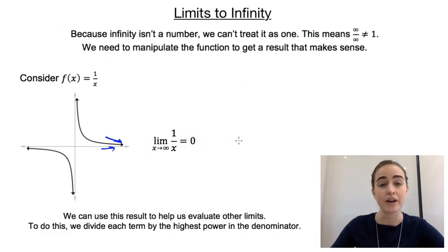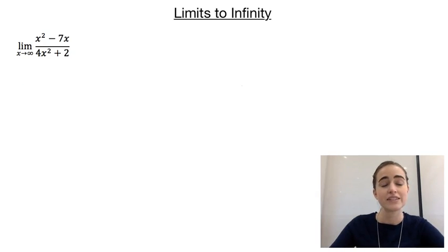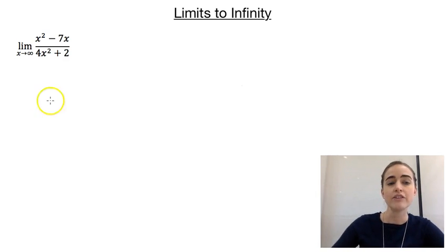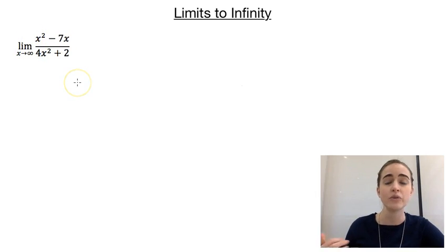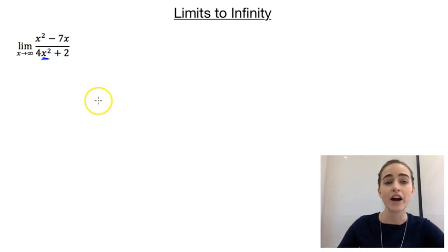To do this, we're going to divide every single term by the highest power in the denominator. So our first example says: the limit as x approaches infinity of x squared minus 7x, all over 4x squared plus 2. If we were to straightforwardly substitute infinity in, we'd end up with that infinity over infinity problem. So instead, we look at our x's — the highest power of x in the denominator is x squared, so we're going to divide every single term in this function by x squared.